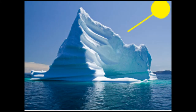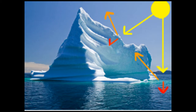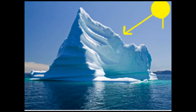Albedo is the amount of the sun's radiation reflected from a surface. In this clip, you can see that some of the sun's radiation hits the ice and is then reflected or absorbed. The same thing happens to the water — some of the radiation is absorbed while the rest is reflected.